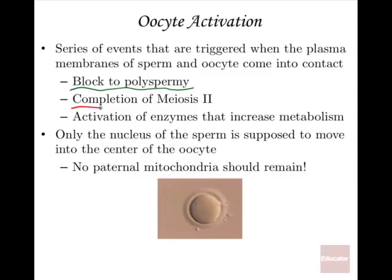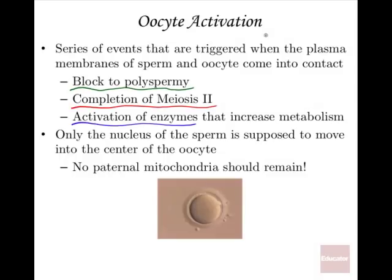Next is completion of meiosis II. A secondary oocyte is arrested in meiosis II, and meiosis II completes once that sperm has entered. There's also activation of enzymes that increases metabolism. In an egg cell, there are a lot of mRNA strands just hanging out in the cytoplasm kept inactive by certain proteins. Once the oocyte is activated, you turn on the mRNA and start synthesizing important proteins for making an embryo.